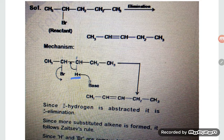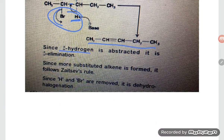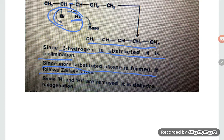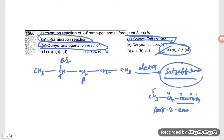The same reaction: the base is attacking on this hydrogen, so a double bond is being formed and elimination of hydrogen occurs — hydrogen and bromine both are getting eliminated and an alkene is formed. Since the beta hydrogen is removed, it is called beta elimination. Since the more substituted alkene is formed, it follows the Zaitsev rule. Since hydrogen and bromine are removed, it is dehydrohalogenation. So the correct option is option number four — A, B, and C are all correct.